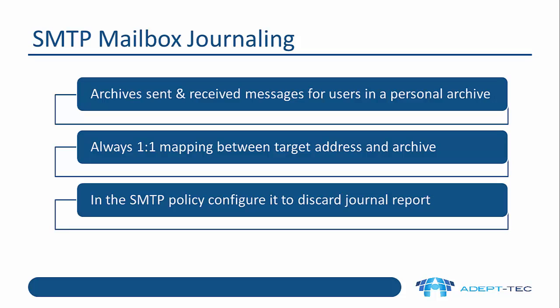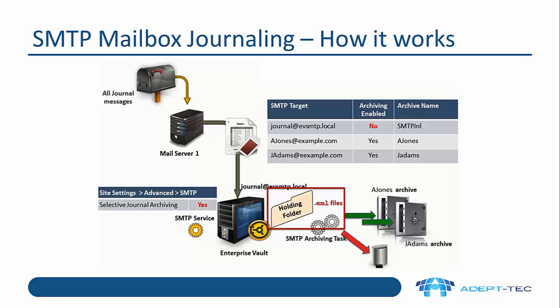The second option, which is subtly different, is SMTP mailbox journaling. In this case it archives sent and received messages for users in a personal archive, so there is a one-to-one mapping between target address and archive. In the SMTP policy you configure it to discard the journal report. The diagram looks similar to the previous one, but now we have targets for A. Jones and J. Adams, and emails are placed into individual archives — which could be mailbox archives or SMTP archives — for each of those users.